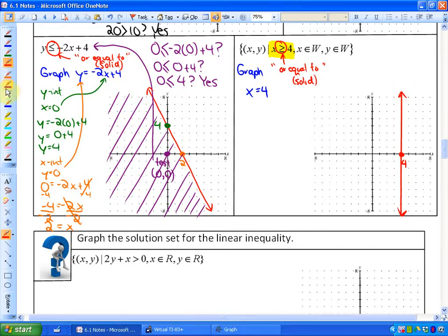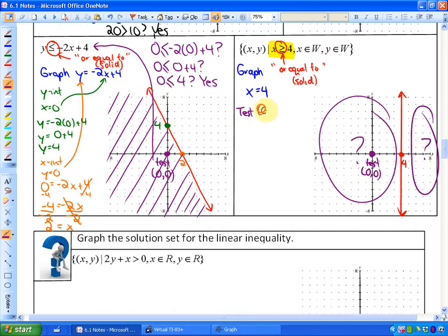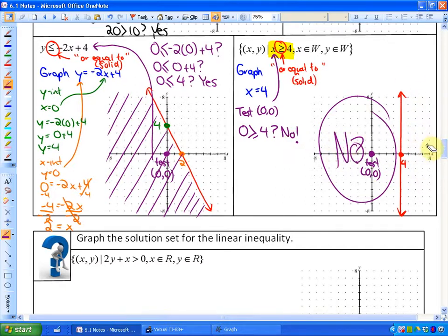Next we're going to take any test point because we want to know which side of that boundary line is going to be shaded. So we're going to test (0, 0). That's the easiest one to test. We substitute it into the inequality. Since we only have an x in our inequality, we're just going to see is 0 greater than or equal to 4. That answer is no. So (0, 0) is a no, which means the opposite side is a yes.